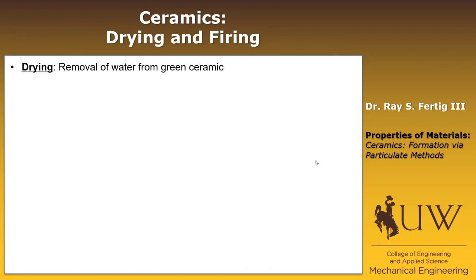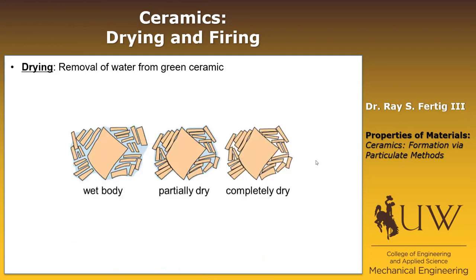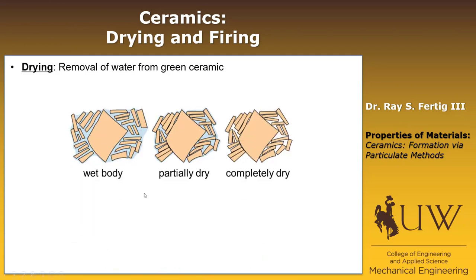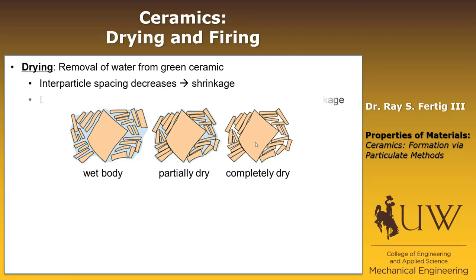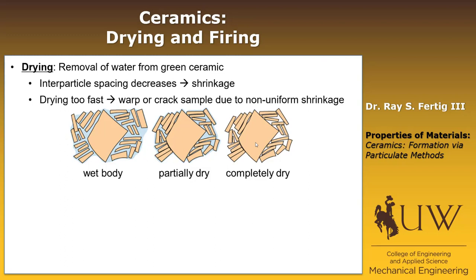Drying is just the removal of water from the green ceramic. As the water is removed, the particulates get closer together and finally it completely dries out. The inter-particle spacing decreases, creating shrinkage in the part. If you dry too fast, you can create non-uniform shrinkage, which will warp or crack the part you're trying to make.